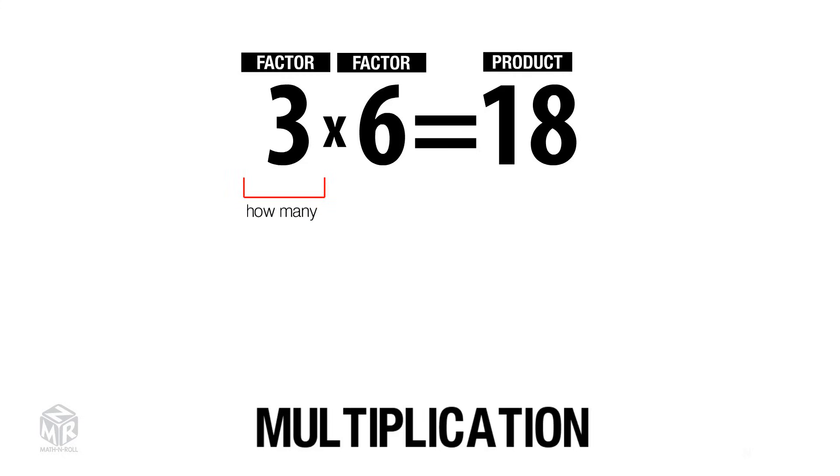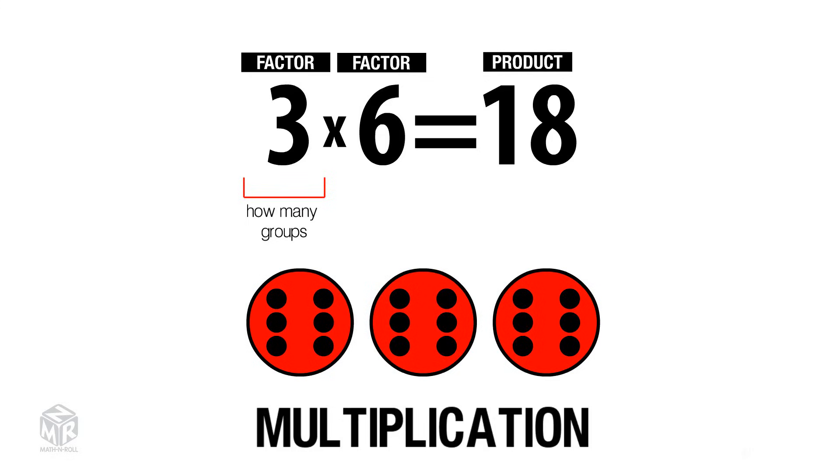3 is the amount of groups that we have. We draw three circles to represent the groups. 6 is how many items we have in each group.